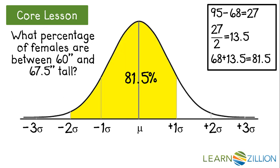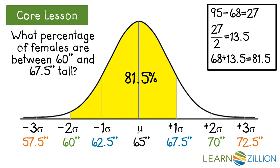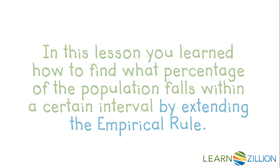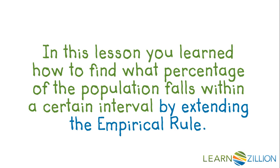So we would say that about 81.5% of adult American females have a height between 60 and 67.5 inches tall. In this lesson, you learned how to find what percentage of the population falls within a certain interval by extending the empirical rule.